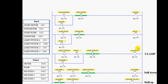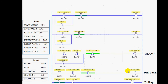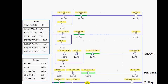When solenoid three is on and limit switch four is on, solenoid one activates. Solenoid one means air goes from one side and the drill bit goes down. When it reaches limit switch two, it stops at the down position. Taking solenoid one and limit switch one as reference, solenoid two then activates and the drill bit goes up. This completes the ladder diagram for automatic drilling.